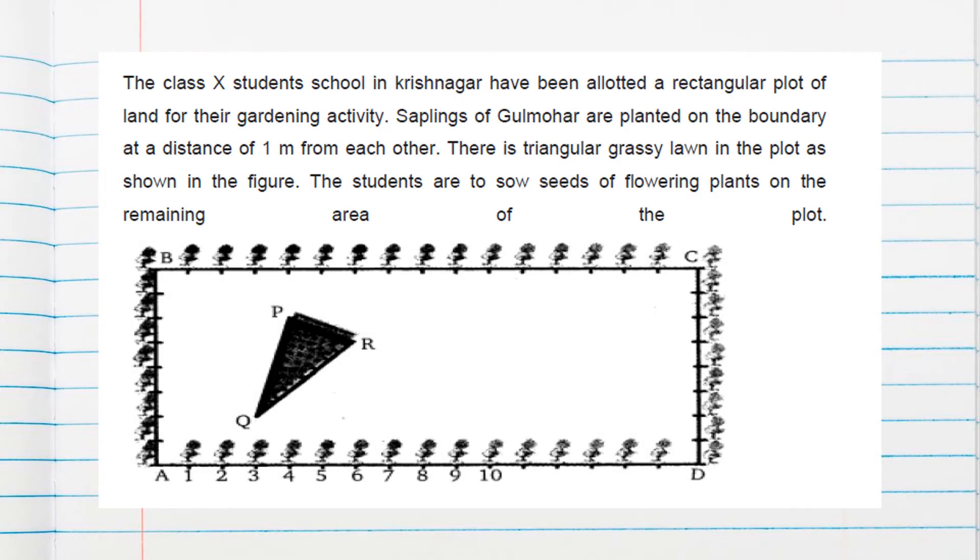Hello students, this is case study 2 from the chapter coordinate geometry, and this is question bank solution. The question is: Class 10 students school in Krishnanagar have been allotted a rectangular plot of land for their gardening activity.